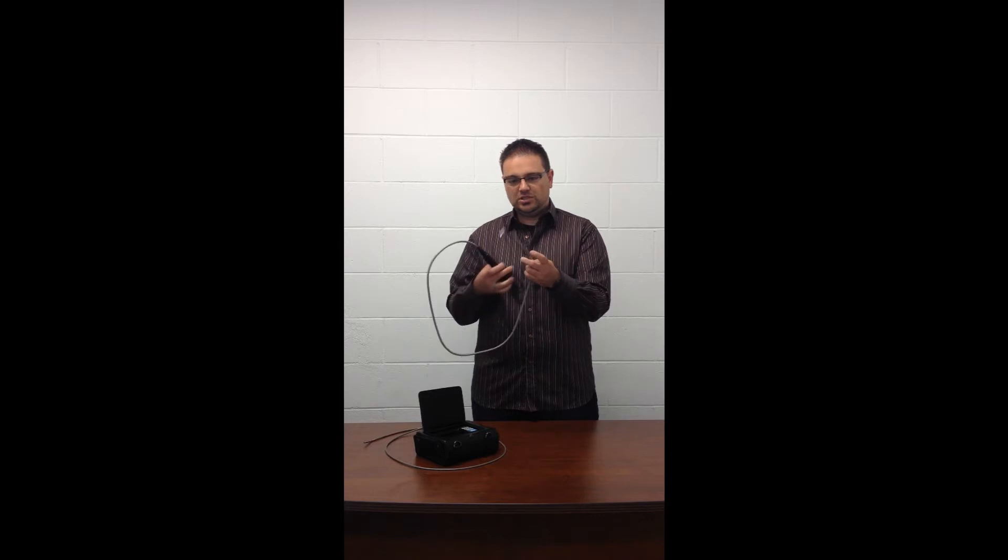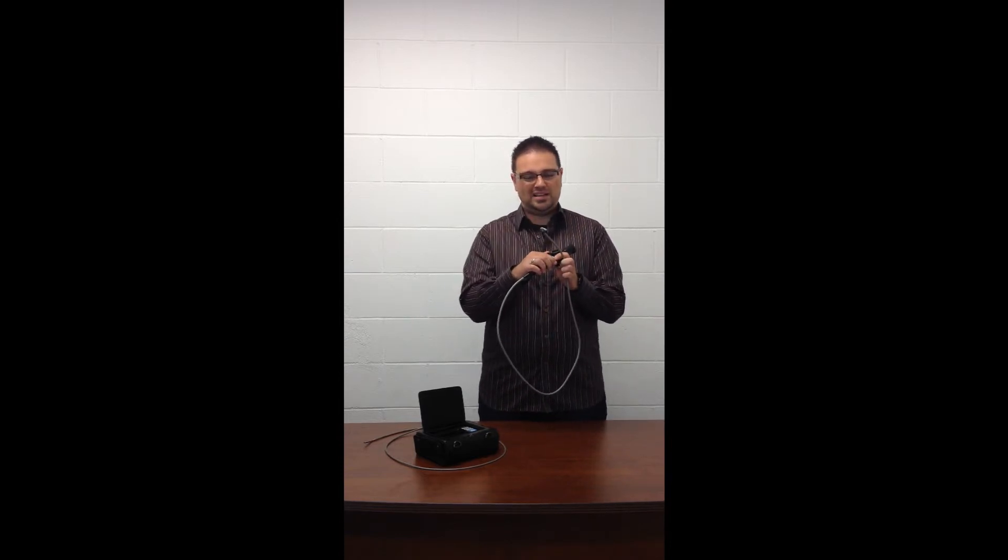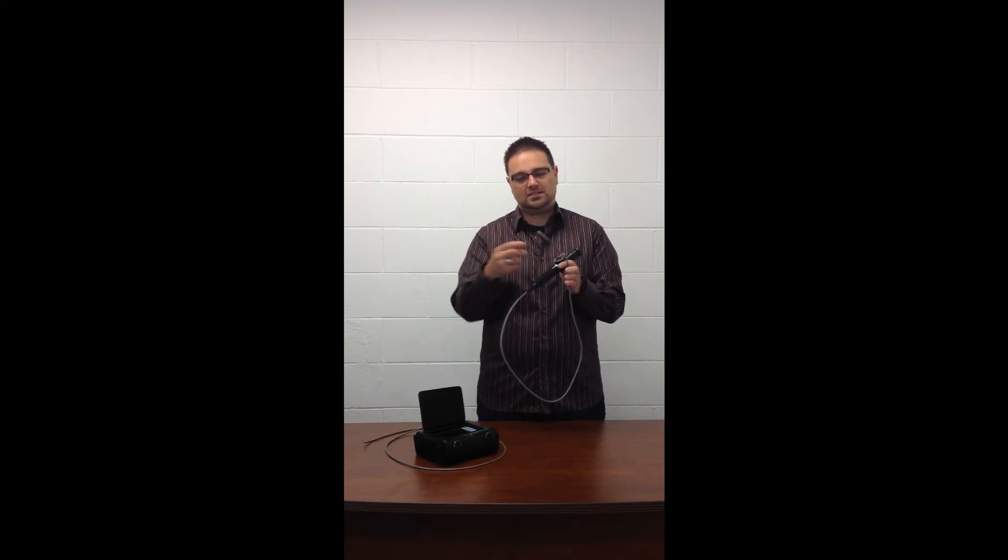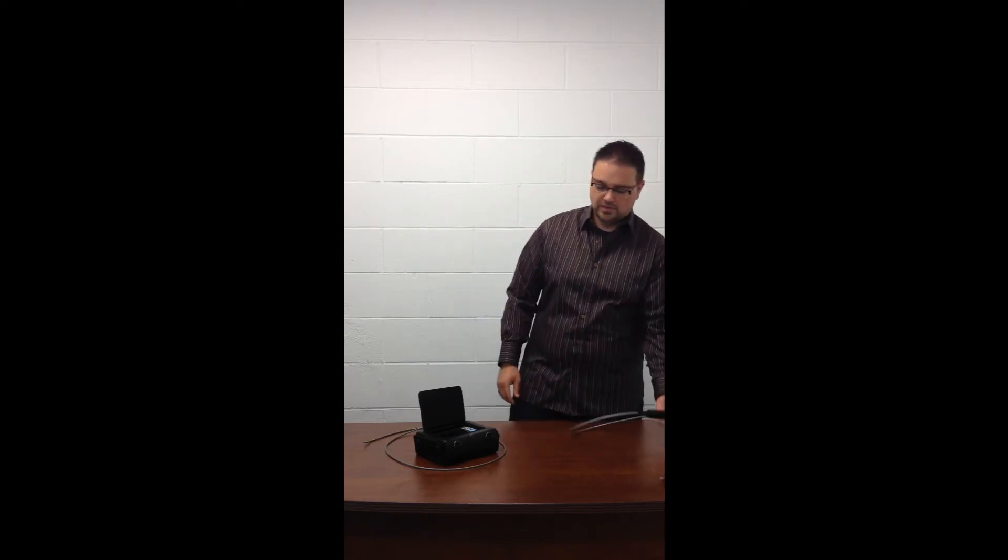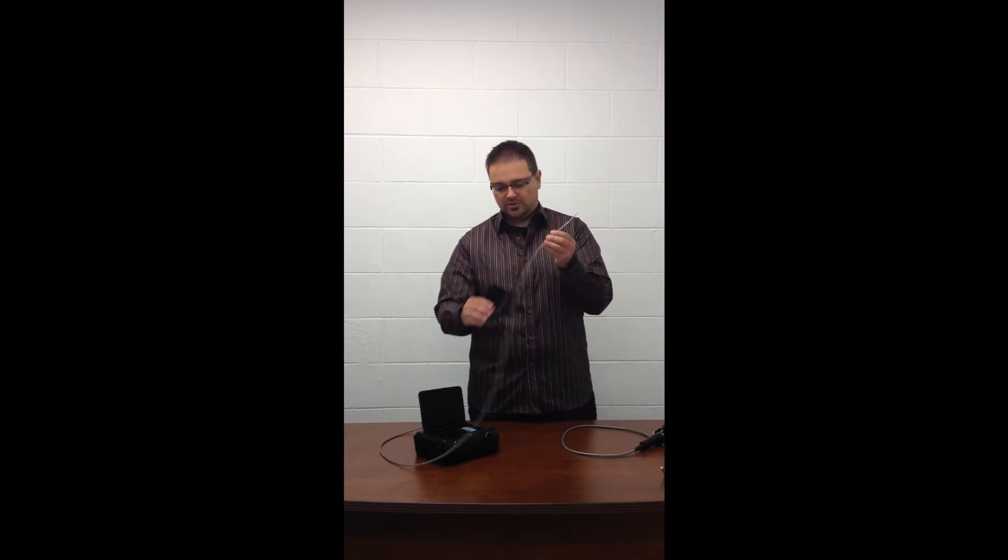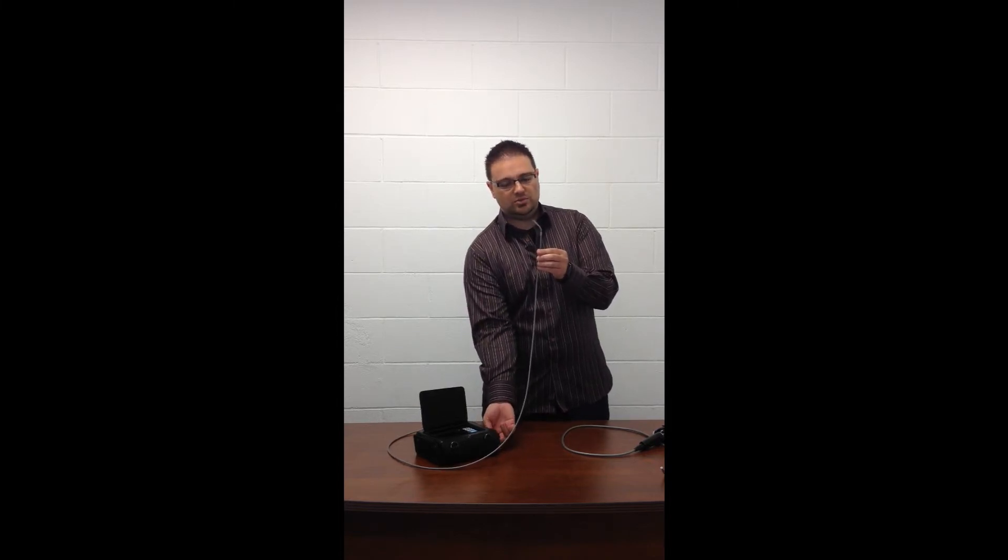Fiber scopes, usually because they have the image bundle in the middle, the articulation doesn't bend as well as some of the other units because you're moving a lot more mass in the same amount of diameter. For a video scope, because there's not as much going on through the cable here, when you bend the articulation wires, they tend to flex a lot more. So you do get a better range of motion with these ones as well.